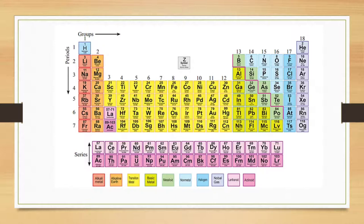Francium, symbol Fr. Radium, symbol Ra. Actinium, symbol Ac. Thorium, symbol Th. Protactinium, symbol Pa. Uranium, symbol U. Neptunium, symbol Np. Plutonium, symbol Pu. Americium, symbol Am. Curium, symbol Cm. Berkelium, symbol Bk. Californium, symbol Cf. Einsteinium, symbol Es. Fermium, symbol Fm. Mendelevium, symbol Md. Nobelium, symbol No. Lawrencium, symbol Lr.